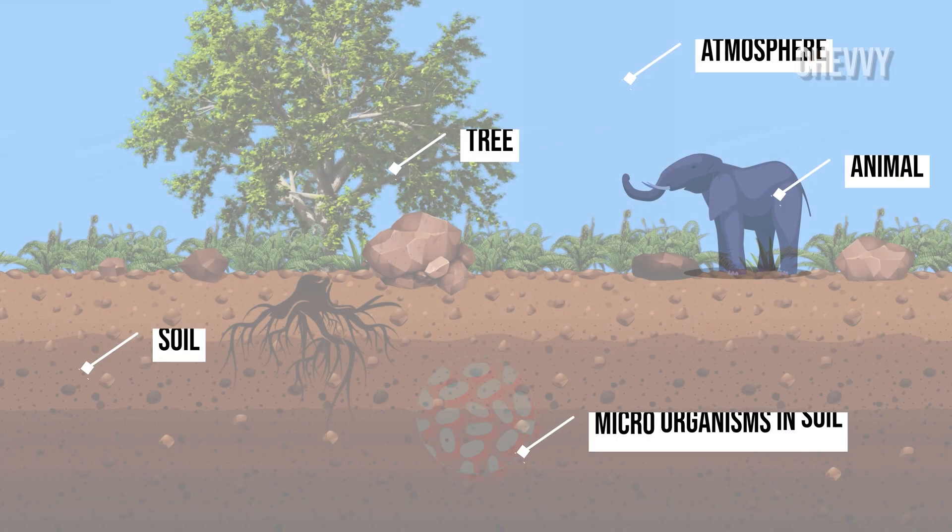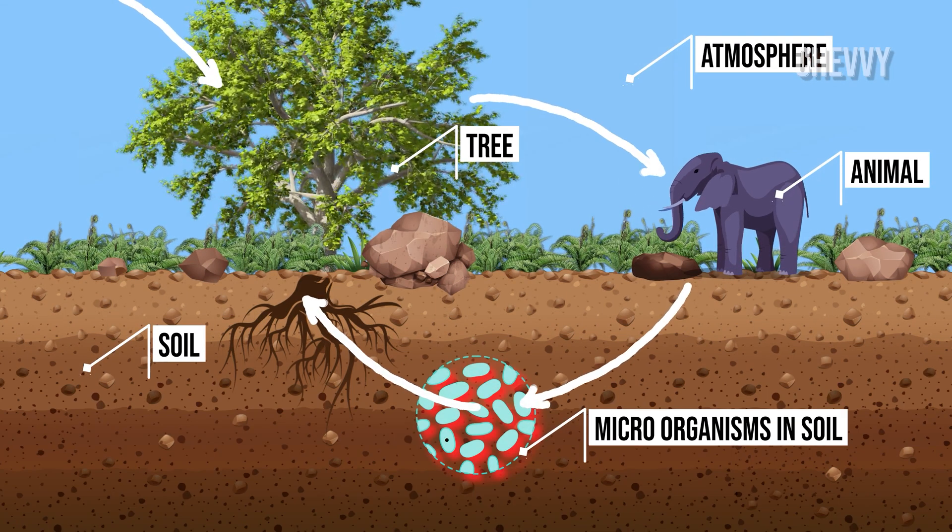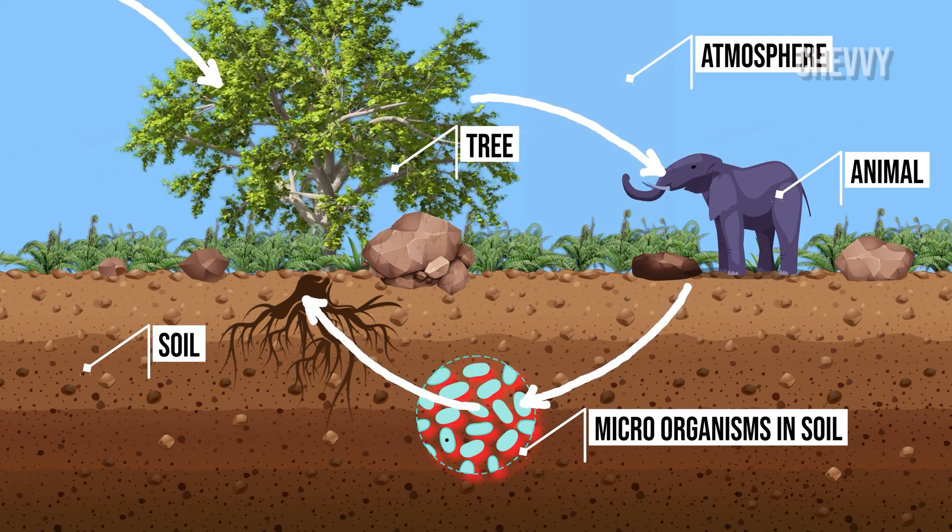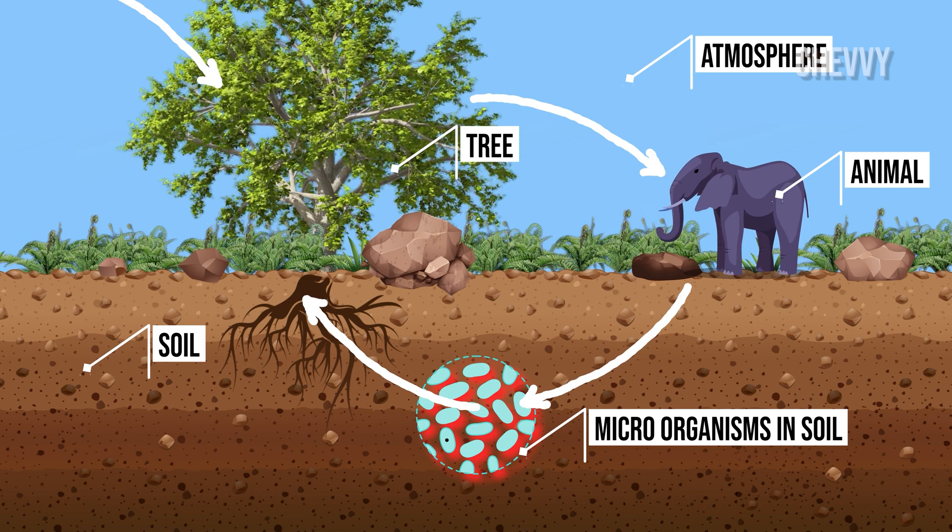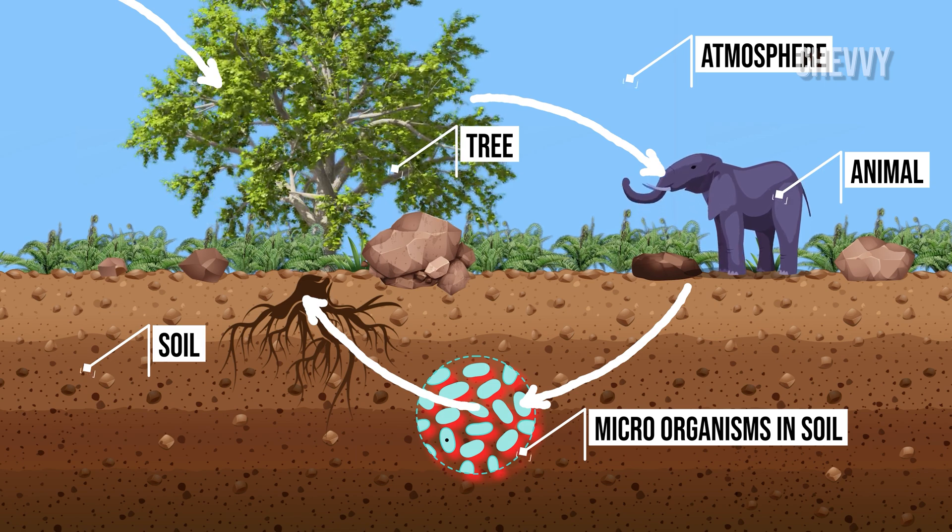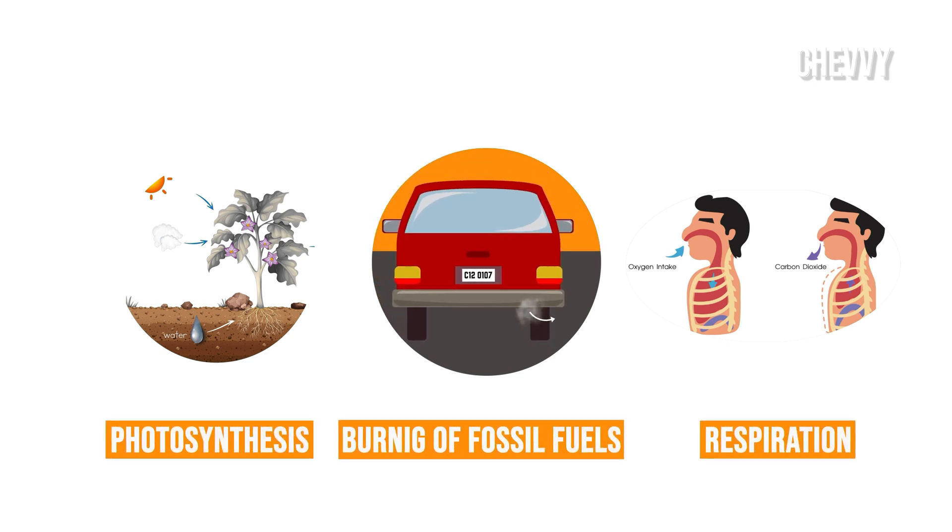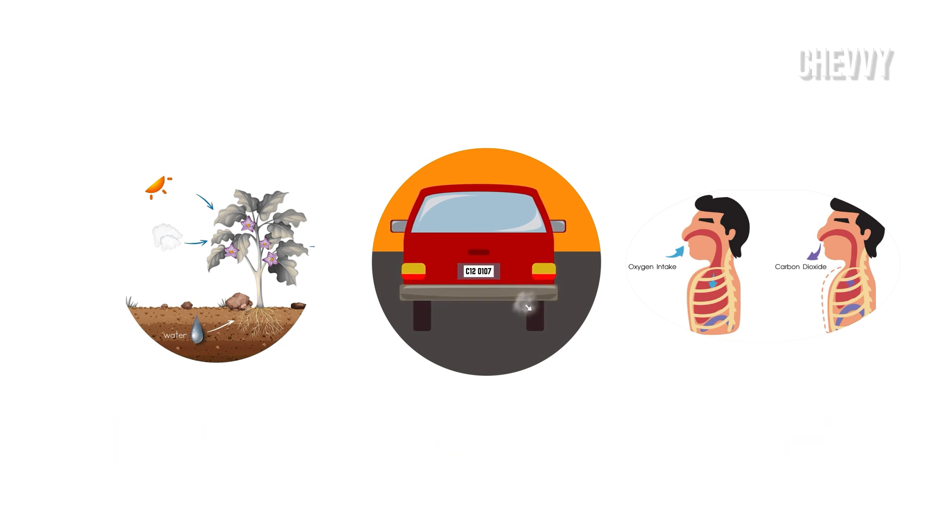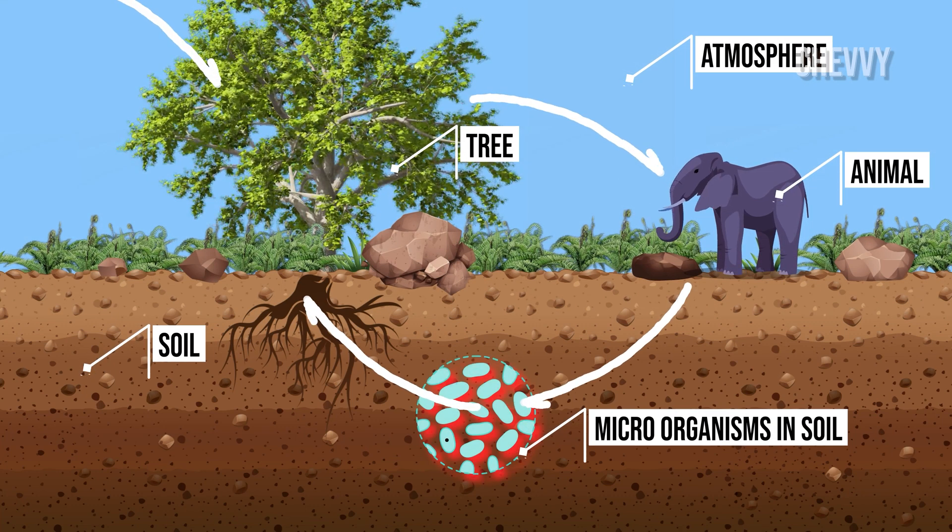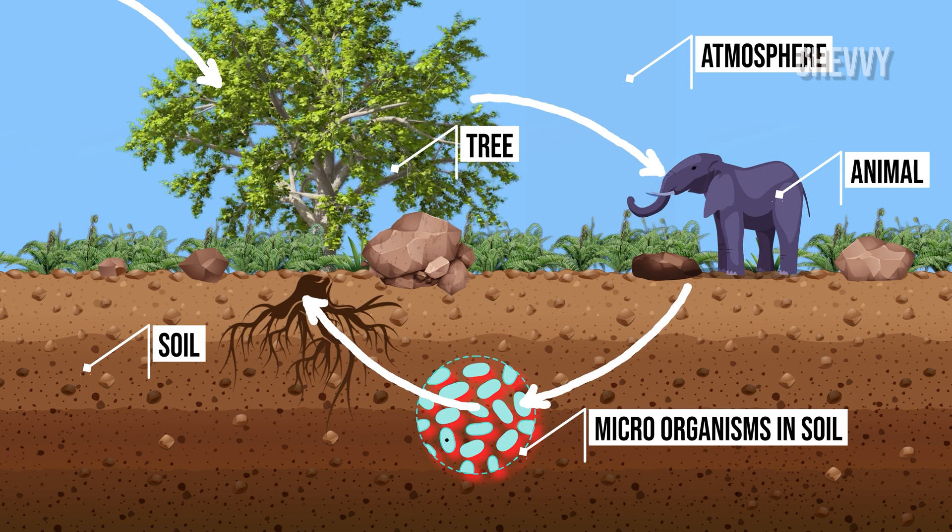Carbon is always transferred from one area to another. It is stored in so-called reservoirs, and it is exchanged between these reservoirs by a number of processes, such as photosynthesis, burning of fossil fuels, and exhalation of air from the lungs. The transfer of carbon from reservoir to reservoir is called carbon cycle.